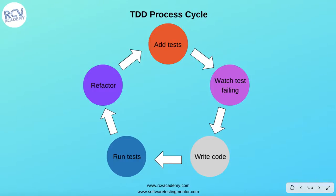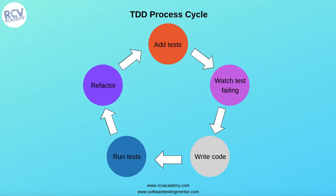Let's look at the whole TDD process cycle. You add the unit test cases — typically the tester identifies these along with the whole team. Then the developer watches the tests failing, writes the code, runs the tests again, and sees how many pass or fail. He then refactors the code until all test cases are passed. This cycle keeps going — new test cases can be added within the cycle, and the cycle of adding code, refactoring, and adding new test cases continues until all tests pass.